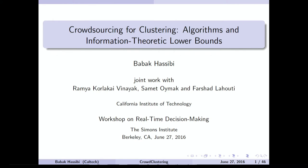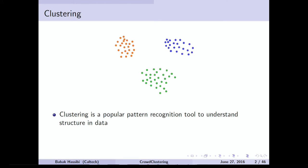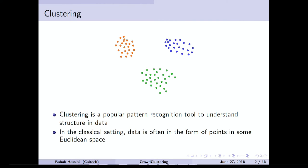I'm going to look at clustering. As you know, clustering is a problem that comes up in pattern recognition. You have data points and you want to put them into sets that are similar so you can understand things better. In the classical setting, data was often given as points in some Euclidean space — you'd have a vector where the components were features, and you wanted points that were close together to be clustered together. There are many algorithms; we heard K-means mentioned earlier.